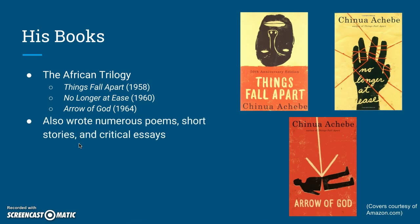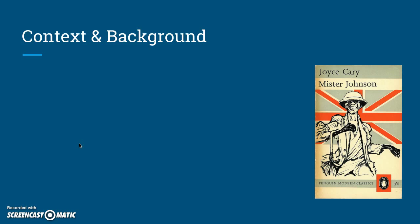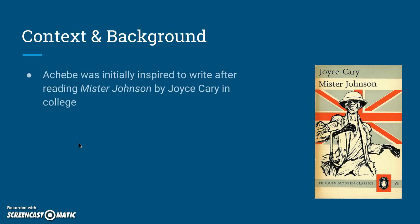Achebe also wrote a large number of poems, short stories, and critical essays. He was definitely a very prolific writer, to the point where he actually has a lot of books coming out nowadays, even after his death, simply because he had so much material that he wrote. Let's cover some of the context and background of Things Fall Apart next.